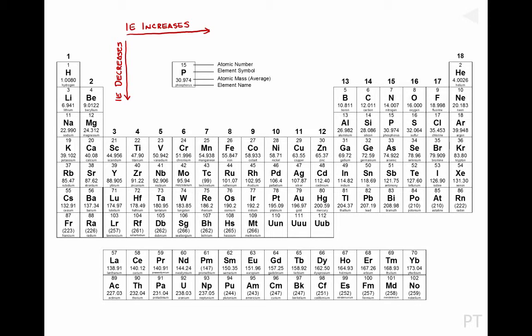Let's add this trend to your periodic table. Make a couple more arrows and label these to show that as you move down the periodic table, the electronegativity decreases, and as you move left to right on the periodic table, electronegativity increases. Based on that, you should know that the element that is the most electronegative — the biggest electron hog — is fluorine. Not far behind fluorine is oxygen, closely followed by nitrogen and chlorine. These four elements are easy to remember if you just make a little phone call: fluorine, oxygen, nitrogen, chlorine — FONC.